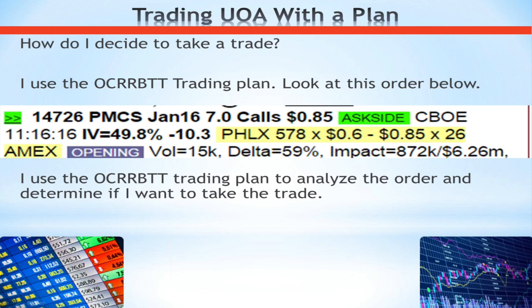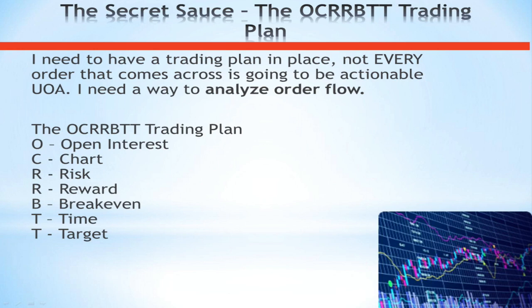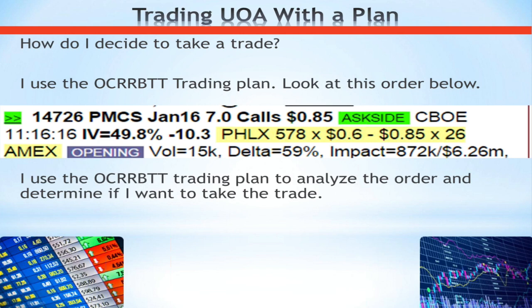The Oak Rivet trading plan stands for: Open Interest, Chart, Risk/Reward, Break-Even, Time, and Target. All of these are metrics I evaluate to determine whether or not an order is actionable. Let's take a look at the PMCS trade using this plan and determine whether or not it was a trade — we already know it worked out really well, but was the information there when it came across the tape to make a determination that it was actionable?